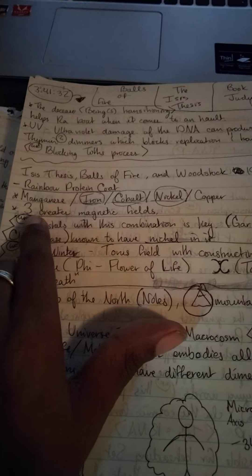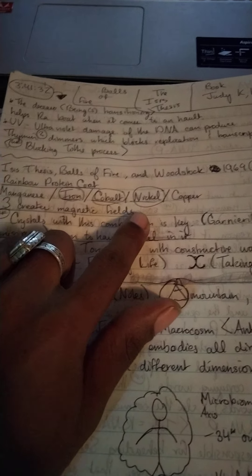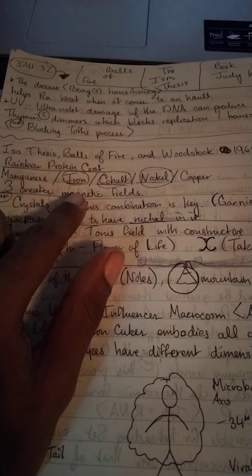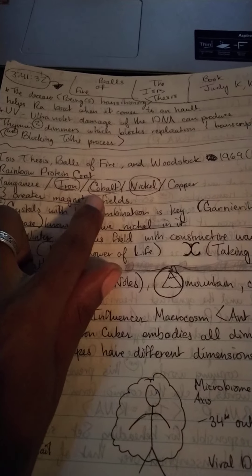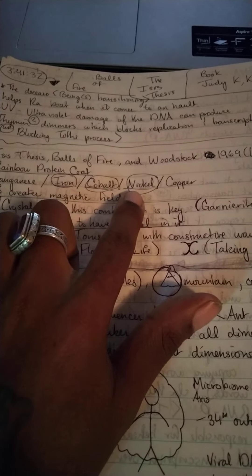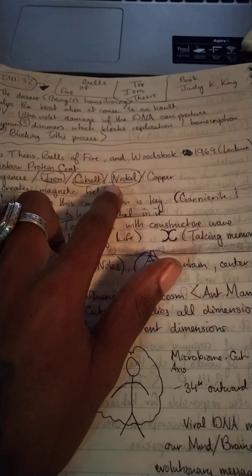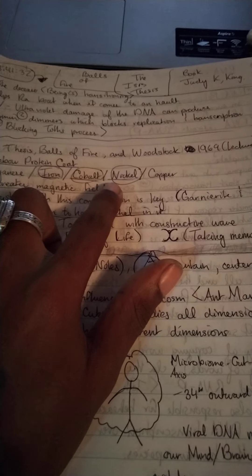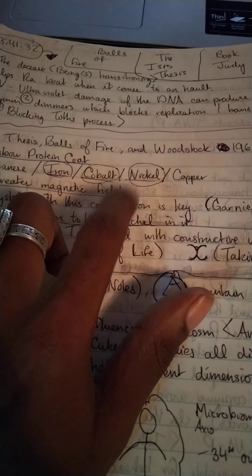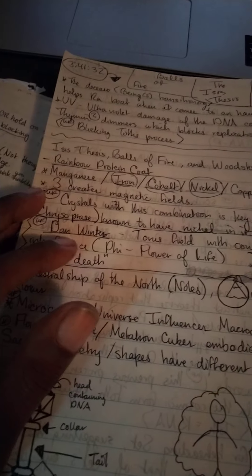These three - iron, cobalt, nickel - are very magnetic and support the magnetic field. No coincidence that this erythrite has cobalt and nickel in it. Nickel is also very rarely found in crystals, but chrysoprase gets that lime green color from the nickel deposits.